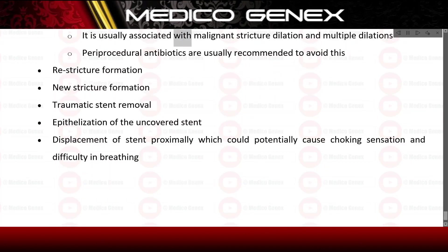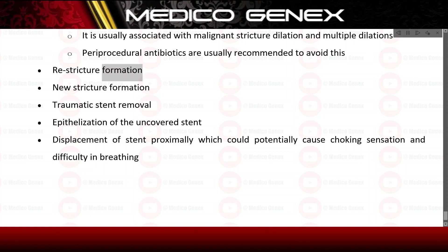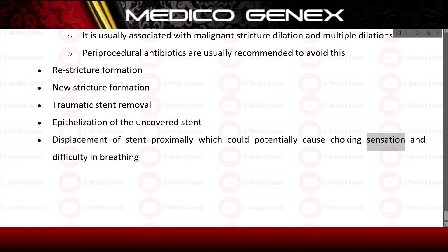Aspiration pneumonia and bacteremia occur in approximately 22% of cases as transient bacteremia from esophageal dilation, usually associated with malignant stricture dilation and multiple dilations. Periprocedural antibiotics are usually recommended to avoid this. Additional complications include re-stricture formation, new stricture formation, traumatic stent removal, epithelialization of uncovered stents, and proximal stent displacement, which could potentially cause choking sensation and difficulty breathing.